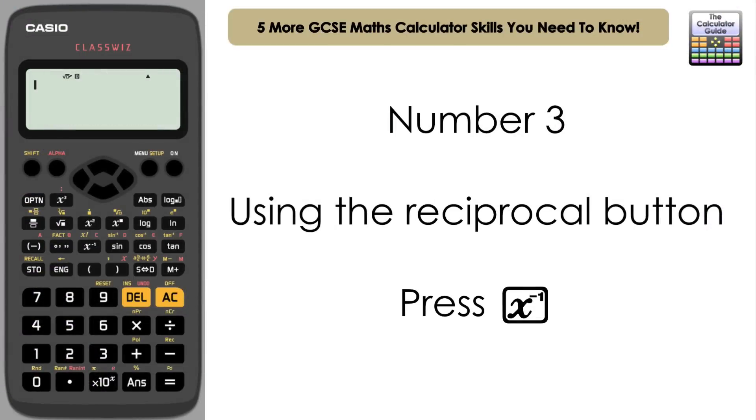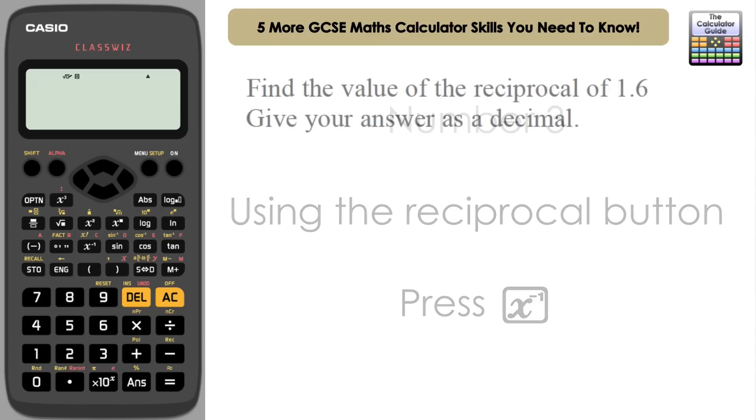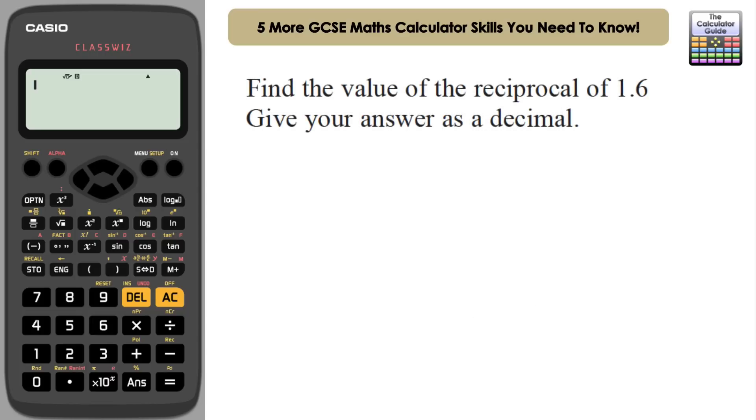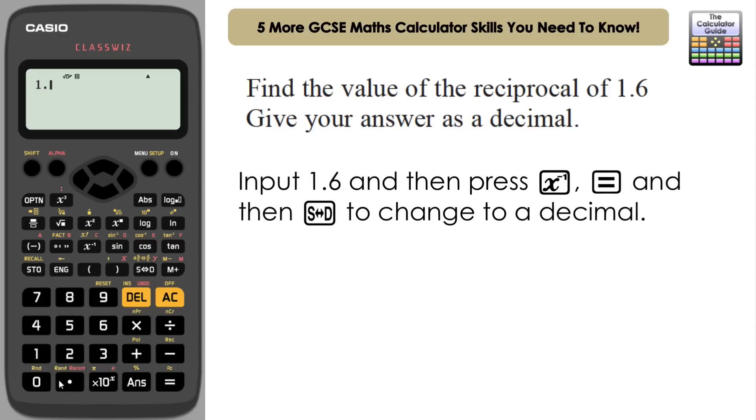The third of the GCSE math calculator skills that you need to know is how to use the reciprocal button. So we've got a question here: find the value of the reciprocal of 1.6, give your answer as a decimal. So input 1.6, and the reciprocal button is here, X to the power of minus 1. Press that and press equals. Here we have the reciprocal, it's 5/8 as a fraction, and then we've got that as a decimal, 0.625. Nice, simple, and straightforward.